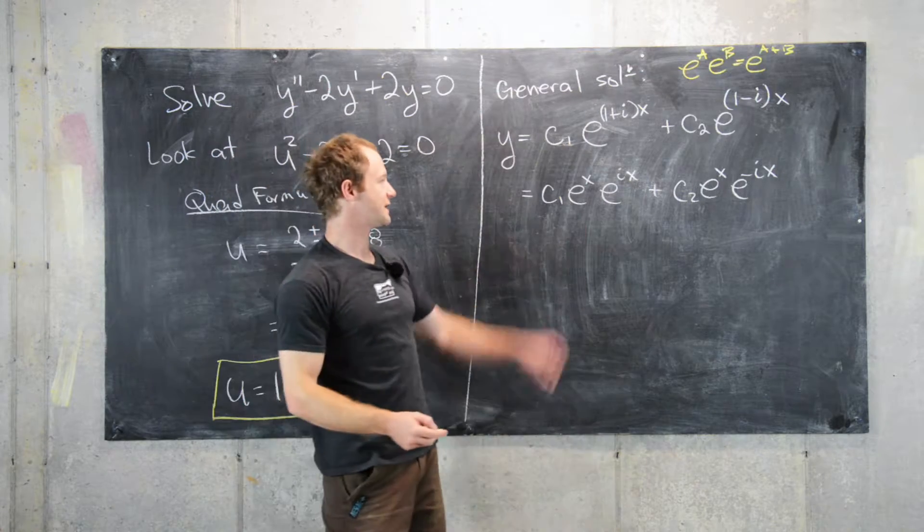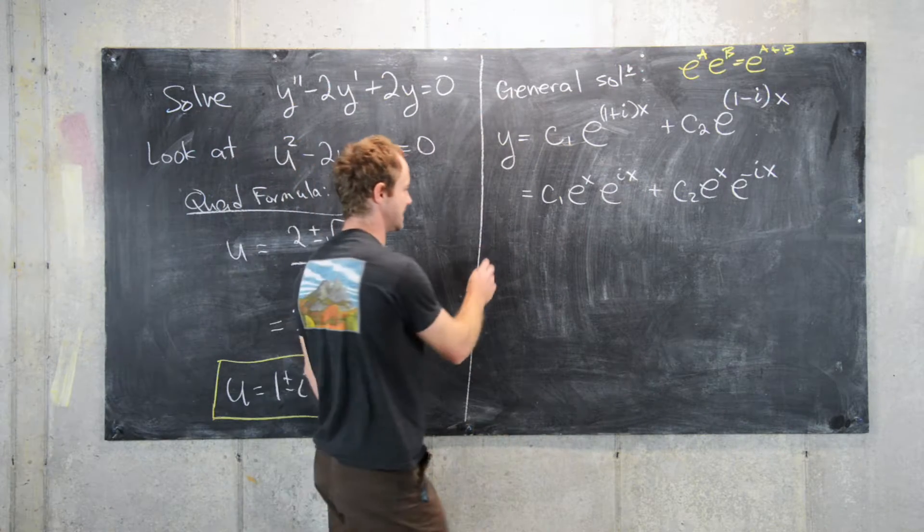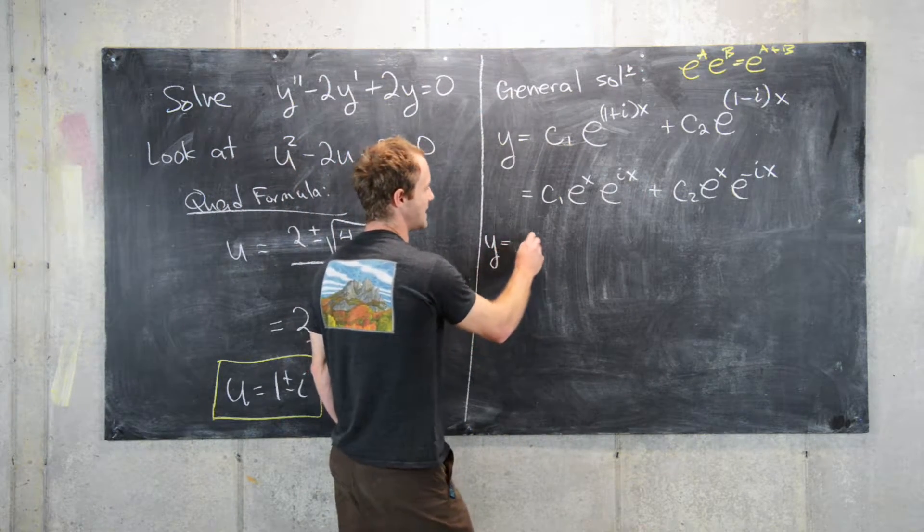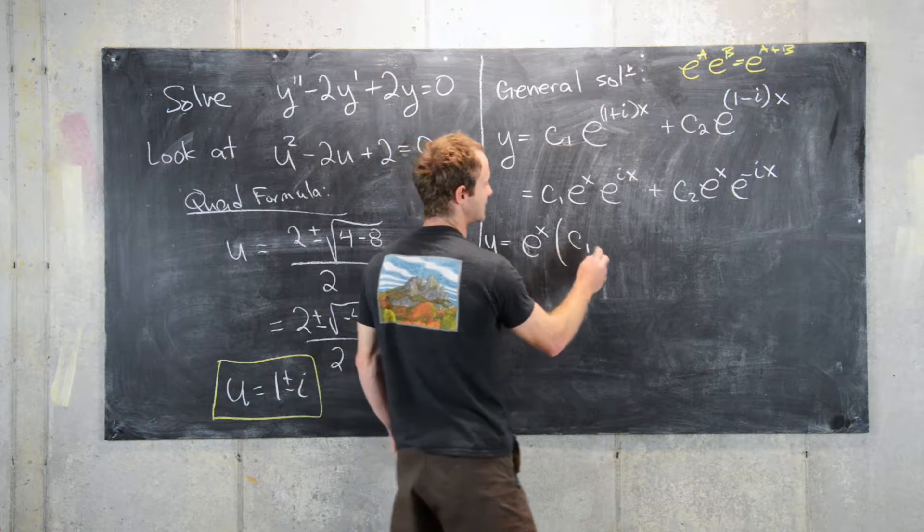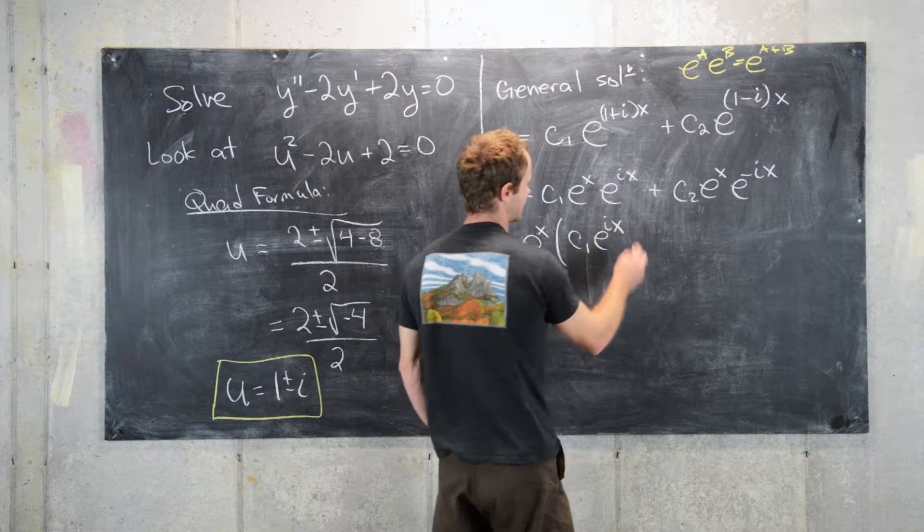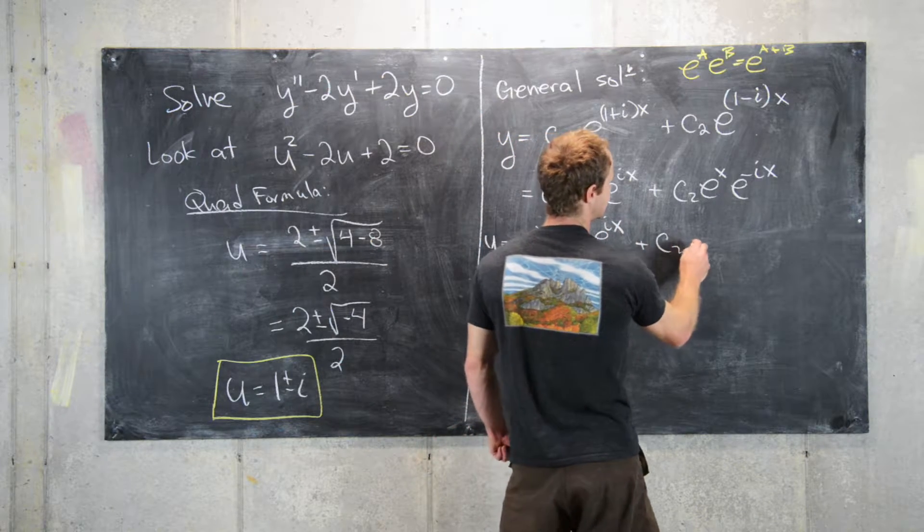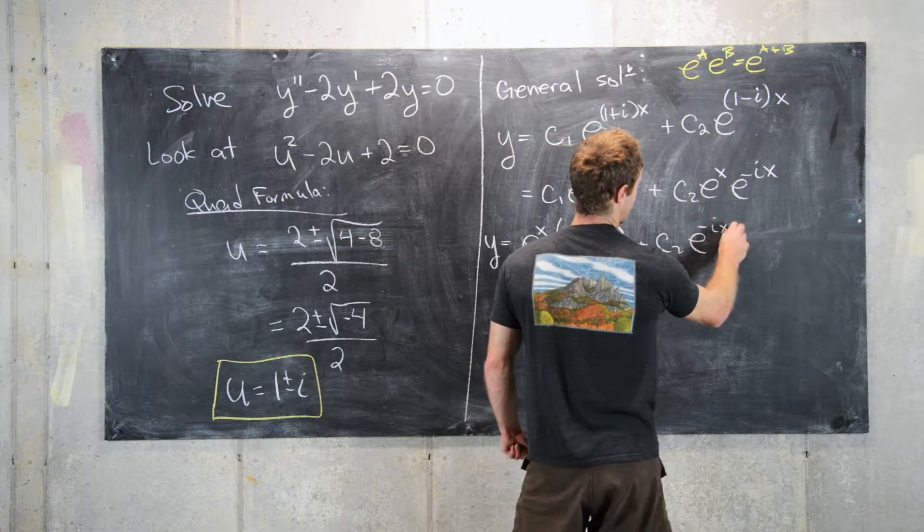Good. And now notice we can factor an e to the x out of this. So that leaves us with y equals e to the x, c1 e to the i x plus c2 e to the minus i x.